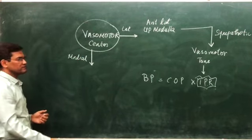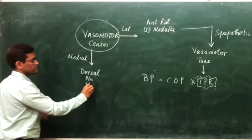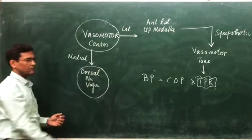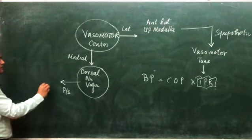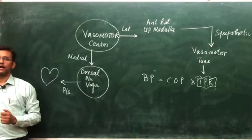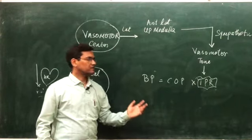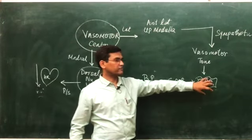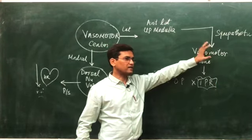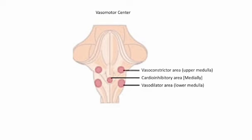The medial part of the vasomotor center relates to the dorsal nucleus of the vagus. The dorsal nucleus of the vagus sends parasympathetic signals to the heart, and this parasympathetic signal decreases the heart rate. This medial part can also be called the cardio-inhibitory center. It maintains a consistent parasympathetic tone to the heart, keeping the heart rate down.